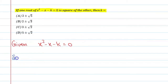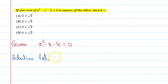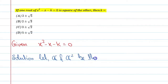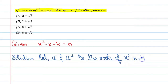Now understand this question again. हमें ये कहा गया है कि जो इसके roots हैं — मानलो इसका एक root दूसरे के square के equal है. तो यहां से हम कह सकते हैं, let alpha and alpha square be the roots of x squared minus x minus k equal to 0. तो अब देखिए, हम ये जानते हैं कि अगर हमारे पास कोई quadratic equation हो, तो उसके roots और coefficients में एक relation होता है.